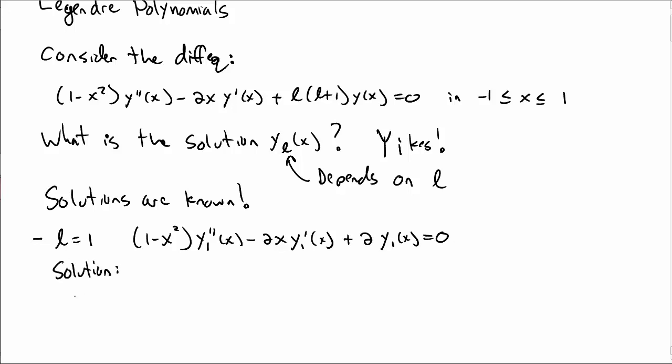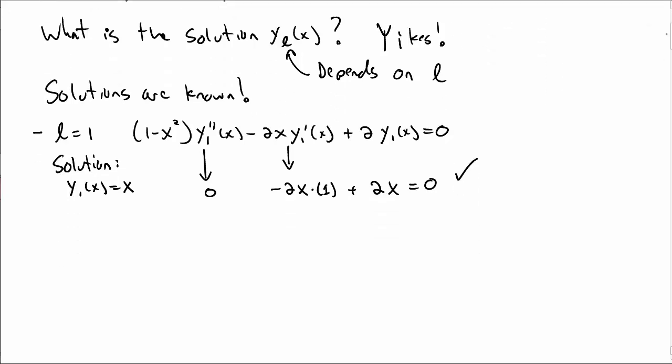Well, so it turns out the solution to this differential equation is y is equal to x. Notably, the first term is 0, the second term is minus 2x times 1, and then the third term is 2x, so it gives you 0. Okay, so that seems like a nice solution, that works.